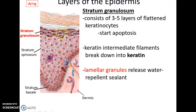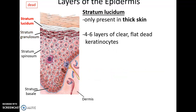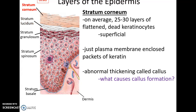Above that is stratum granulosum — three to five cell layers. Cells here are starting to die, entering apoptosis; keratin proteins are being assembled and lamellar granules are being released to produce a water-repellent layer. Above that, in thick skin only, is stratum lucidum — about six layers of clear, flat, dead cells. Above that is stratum corneum, which averages twenty-five to thirty layers of flat, dead, superficial cells that are essentially plasma membranes filled with keratin.